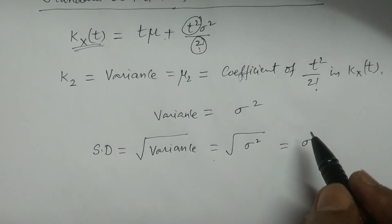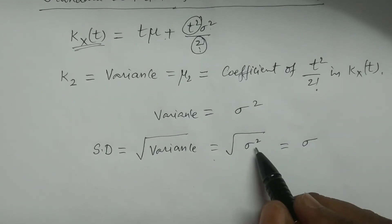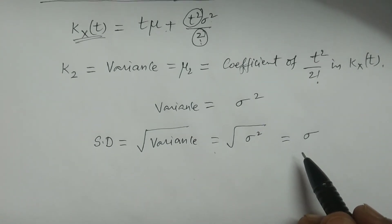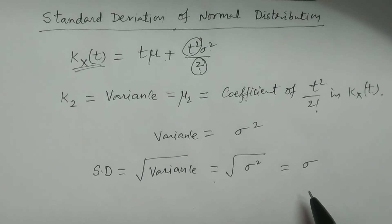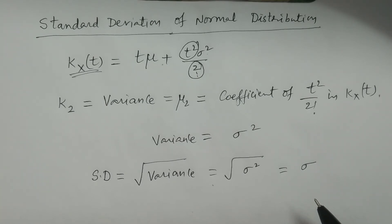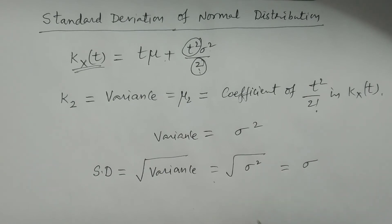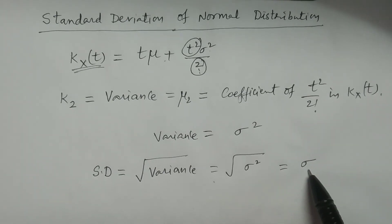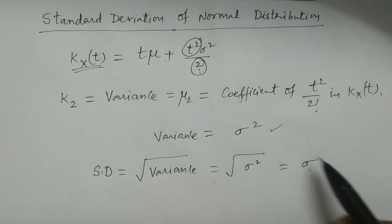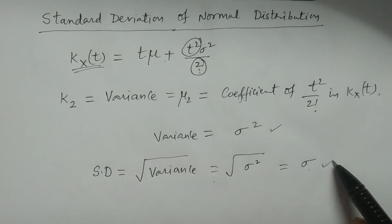Why positive sigma? Because variance and standard deviation are always positive values — always greater than 0 for any distribution, for any particular data. The variance is a positive value and the standard deviation is also a positive value. Therefore, the standard deviation of normal distribution is σ and the variance of normal distribution is σ².